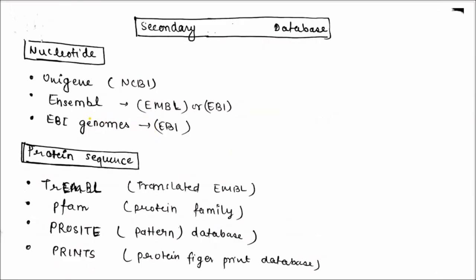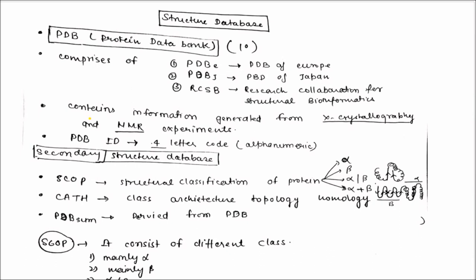Secondary databases include secondary nucleotide databases like Unigene at NCBI, Ensembl at EMBL, and EBI Genomes at EBI. Protein sequence secondary databases include TREMBL, PFAM (protein family), PROSITE (pattern database), and PRINTS (protein fingerprint database).